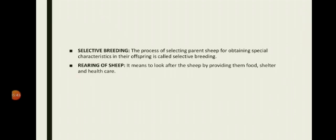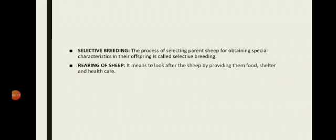Next is the rearing of sheep, which means looking after sheep by providing them food, shelter, and proper health care. The person who looks after sheep is called a shepherd. Sheep are herbivores and prefer to eat grass and leaves. Apart from grass and leaves, sheep are also fed a mixture of pulses, corn, jowar, and oil cakes. Oil cake is the material left after the extraction of oil from oil seeds. During winter, sheep are kept indoors and fed on leaves, grains, and dry fodder.